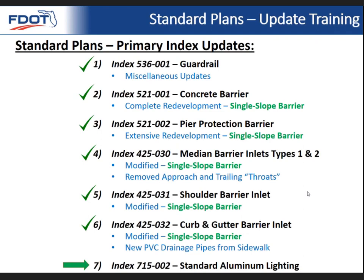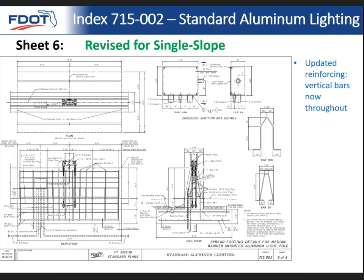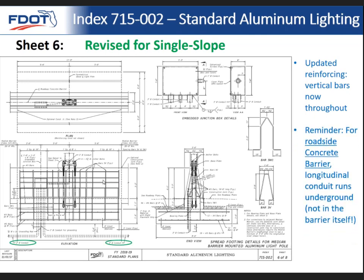Last but not least, how single slope barriers affect the aluminum lighting standards. We've updated to single slope throughout. Because for median barriers we now have continuous reinforcing, we've also had to change the segment that supports the lighting foundation to also have continuous steel, so that it corresponds to the median barrier which also has continuous steel.